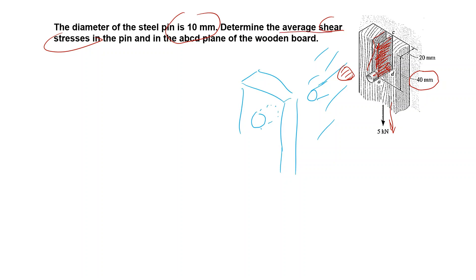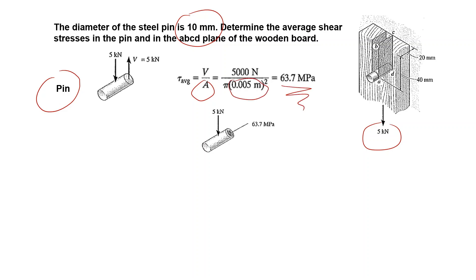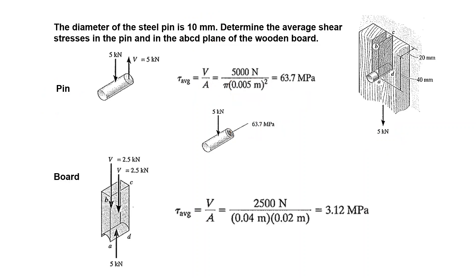The question is to determine the average shear stress in the steel pin and in the ABCD plane of the wooden board. For the pin: the force is 5 kilonewtons, and using the given diameter to find the cross-sectional area, the shear stress in the critical section of the pin is 63.7 megapascals.